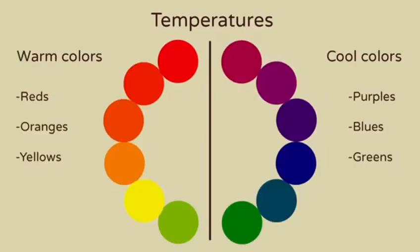When artists talk about color temperatures, they mean either warm colors, which are reds, oranges, and yellows, or cool colors, which are purples, blues, and greens. Opposite temperatures create visual contrast and have different psychological effects.